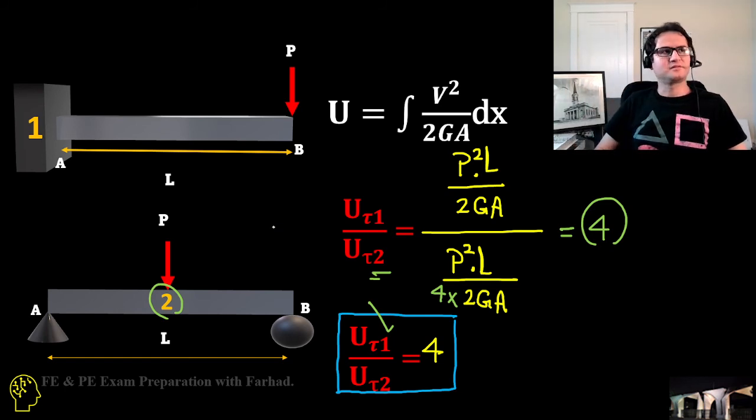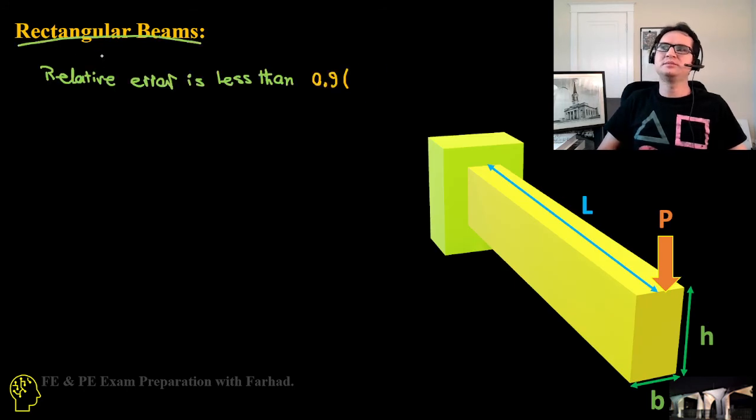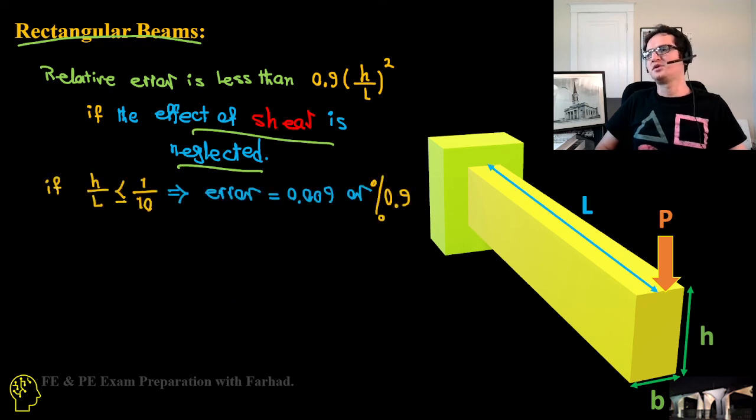Interesting fact: in rectangular beams, relative error is less than 0.9(H/L)² if the effect of shear is neglected. If H/L is smaller than one-tenth, which is almost always the case, then the error is less than 0.9%.